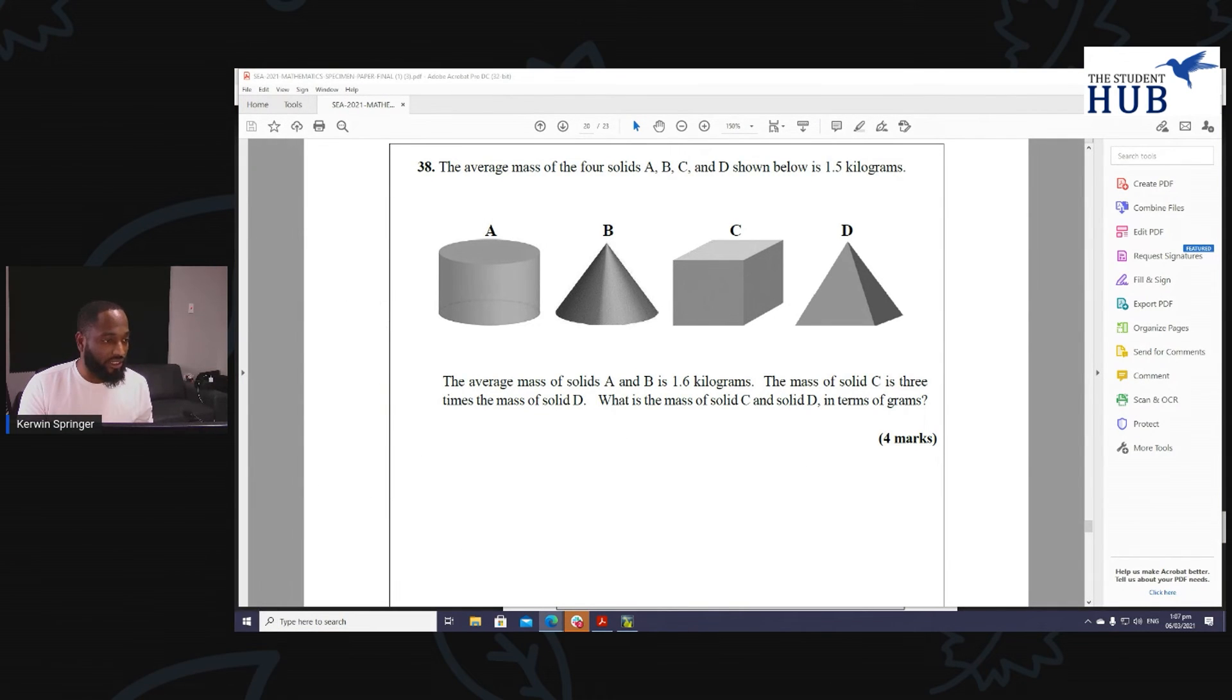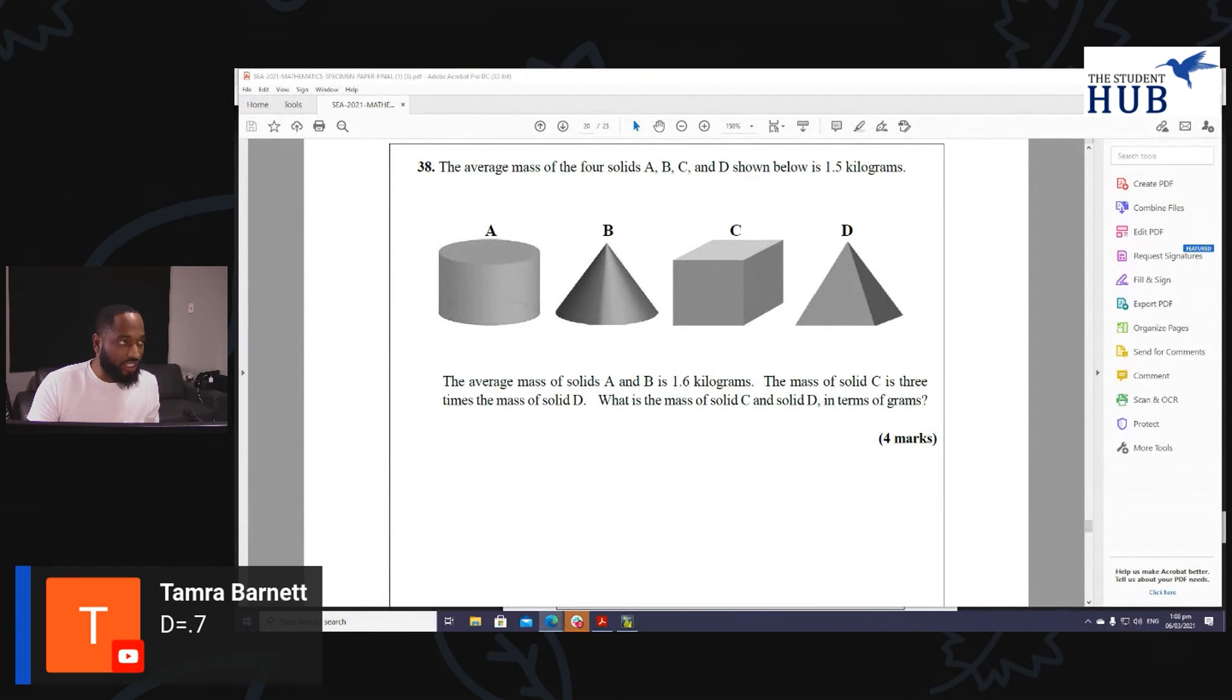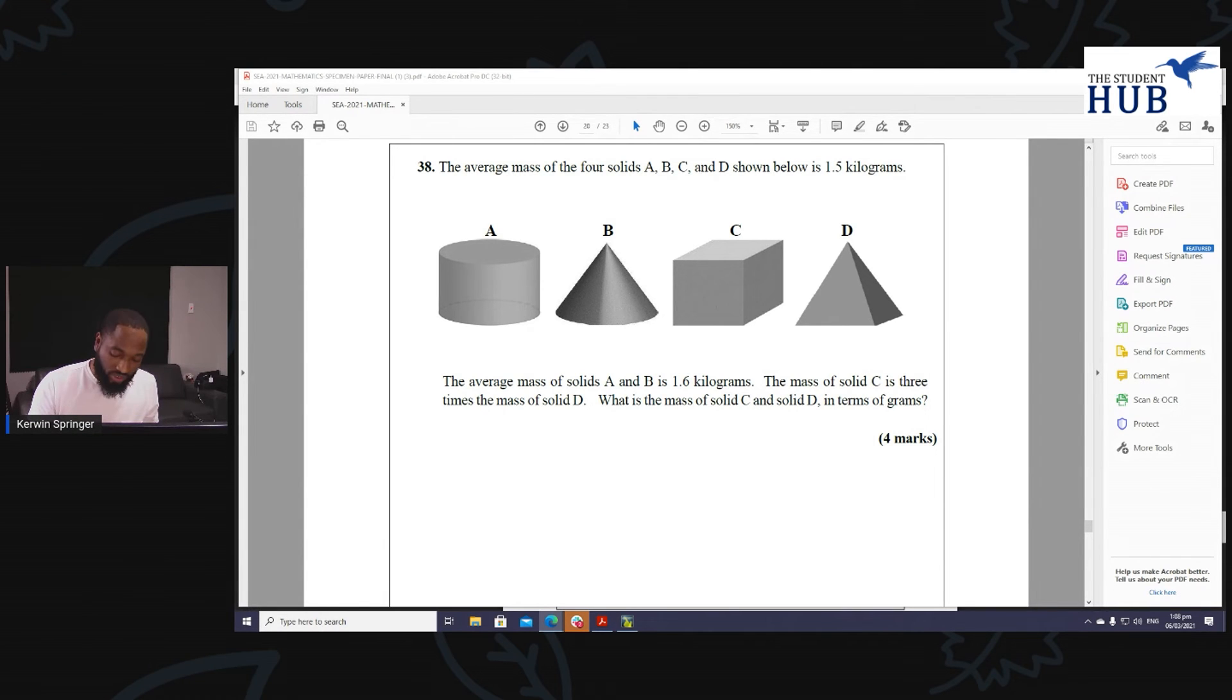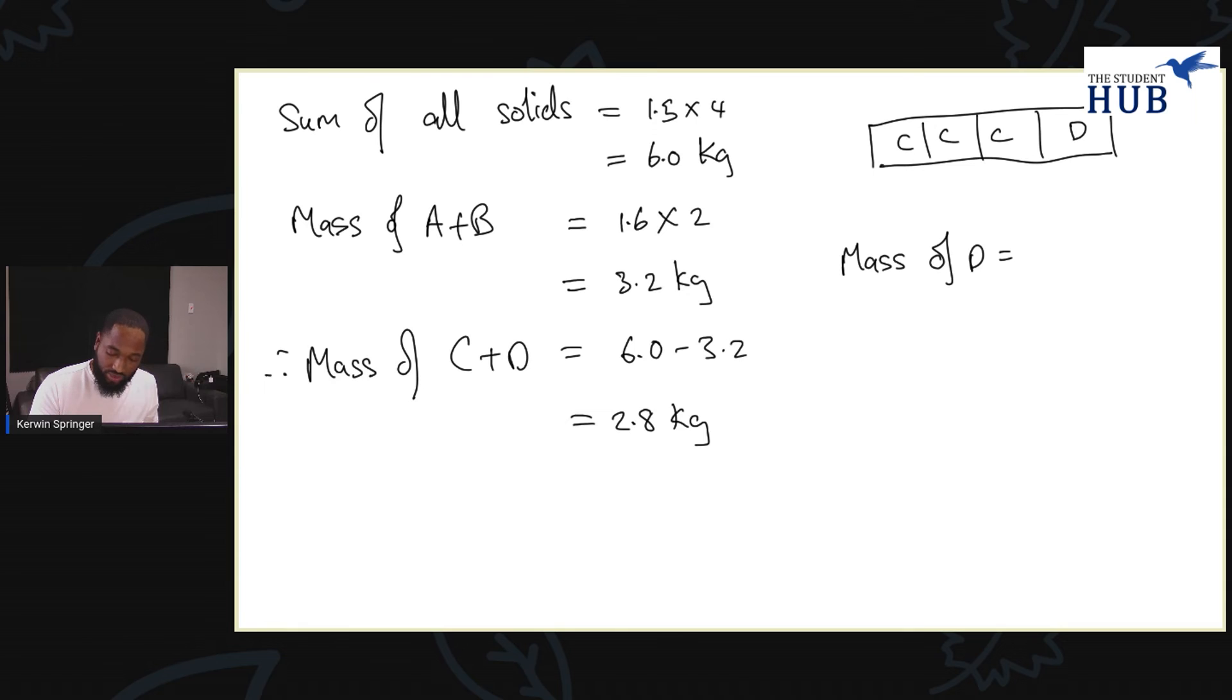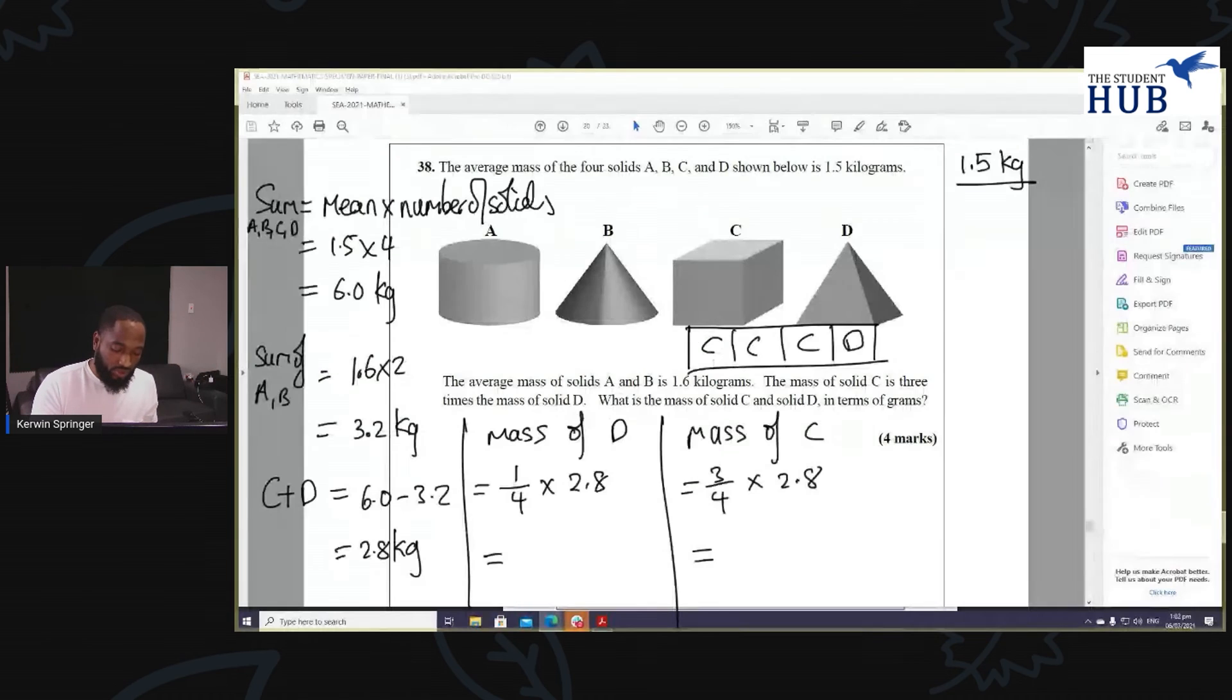Shout out to Micah, one of the students from the SE class. All right, I'm seeing answers. Tomorrow says C will... D will be 0.7 and C will be 2.1. We'll verify that shortly. Sounds good to me. D is going to be a quarter of 2.8, which is indeed 0.7 kilograms, and the mass of C is going to be three quarter of the same 2.8, because that's the mass of C and D combined, which is 2.1 kilograms.